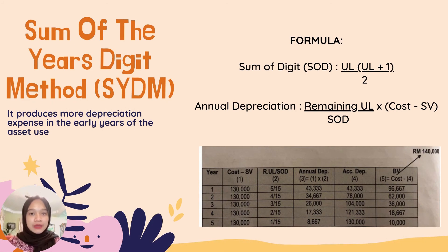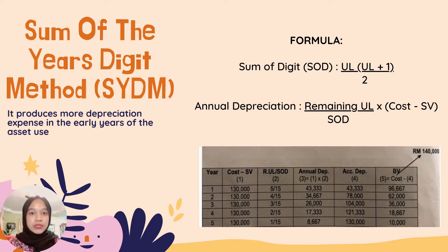Lastly is the sum of the years' digit method, which produces more depreciation expense in the early years of the asset's use. There are two formulas: sum of digits and annual depreciation. The sum of digits formula is useful life multiplied by (useful life plus one) divided by two. For annual depreciation, the formula is remaining useful life divided by sum of digits, and then multiply that result by (cost minus salvage value).